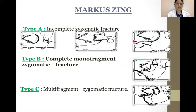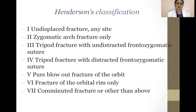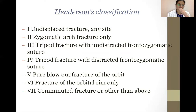The Marker-Zingg classification: Type A, incomplete zygomatic fractures; Type B, complete mono-fragment zygomatic fracture; Type C, multi-fragment zygomatic fracture. Manson and colleagues — based on findings in CT scans, the pattern of segmentation, displacement, and amount of energy dissipated by facial bones secondary to traumatic force: high energy, moderate energy, and low energy fractures. Henderson's classification: Type 1 undisplaced; Type 2 zygomatic arch fracture only; Type 3 tripod fractures with undistracted frontozygomatic suture; Type 4 tripod fractures with distracted frontozygomatic suture; Type 5 pure blowout fractures of the orbit; Type 6 fractures of the orbital rim only; Type 7 comminuted fracture or other.